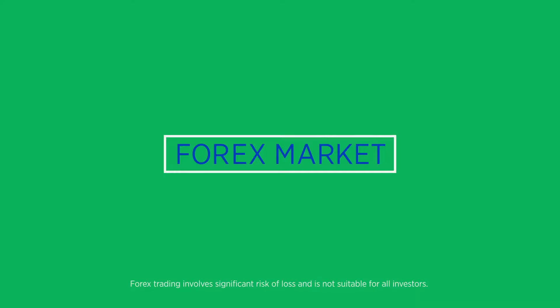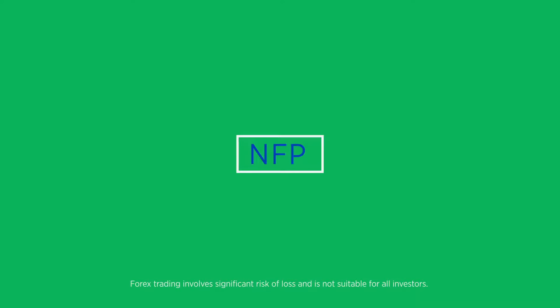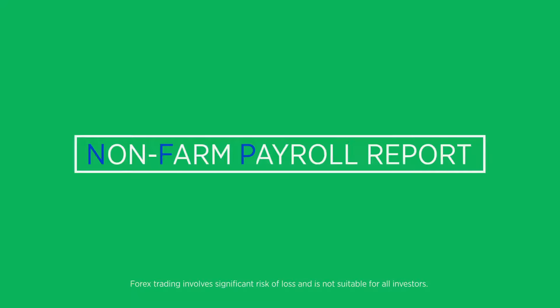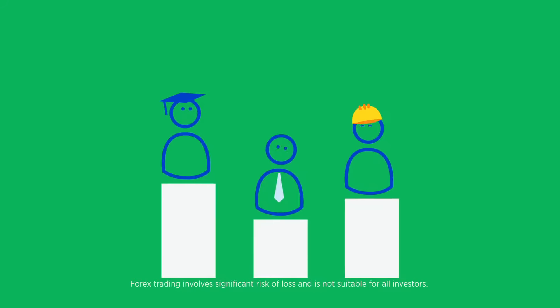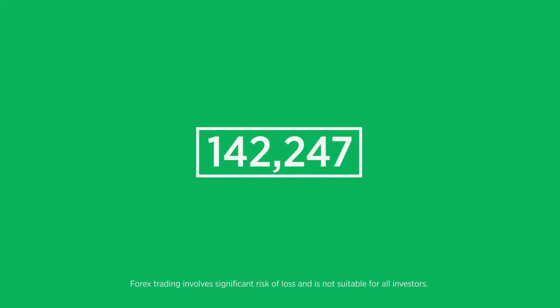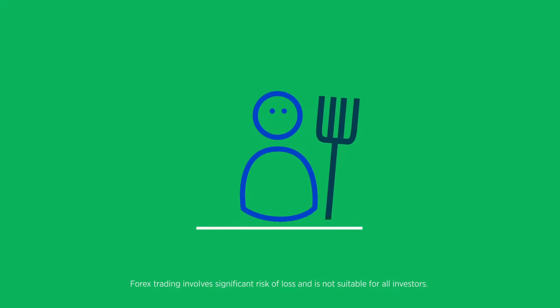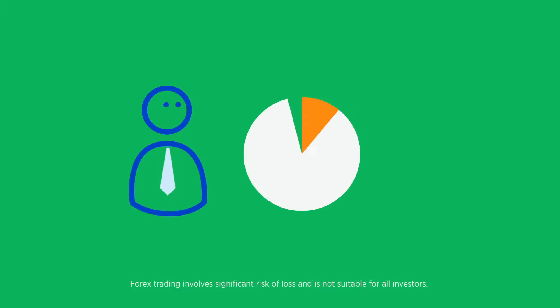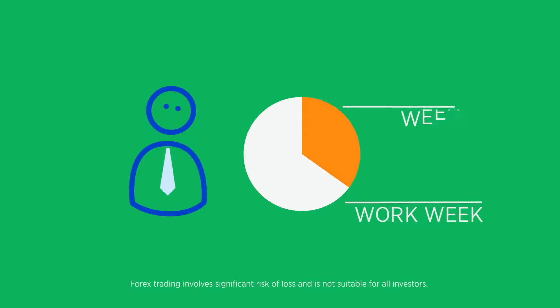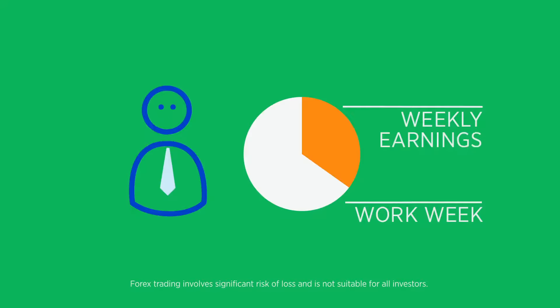One event that almost always impacts the Forex market is the Monthly NFP, or Non-Farm Payroll Report. This is issued by the U.S. Bureau of Labor Statistics and gives a glimpse into employment changes and the labor market in the United States. The figure released represents the net number of jobs added or lost in the economy over the last month, not including jobs in the farming industry. It also contains estimates on the average workweek and average weekly earnings of all non-farm employees.